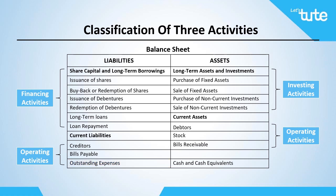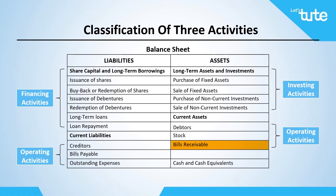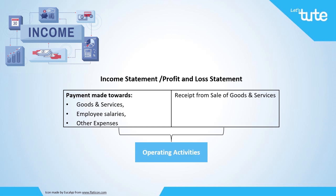Now looking at the asset side — under long-term assets and investments — the purchase of fixed assets, sale of fixed assets, purchase of non-current investments, and sale of non-current investments are classified under investing activities. Under current assets, debtors, stock, and bills receivable would classify as operating activities. Looking at the income statement — also known as the profit and loss statement — payment made towards goods and services, employee salaries, other expenses, and receipts from sale of goods and services classify as operating activities.